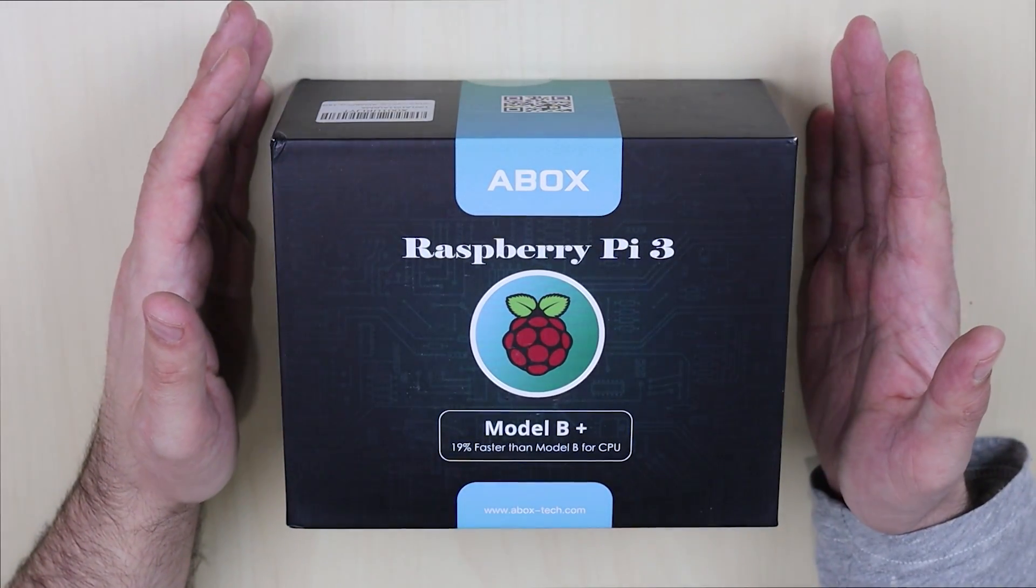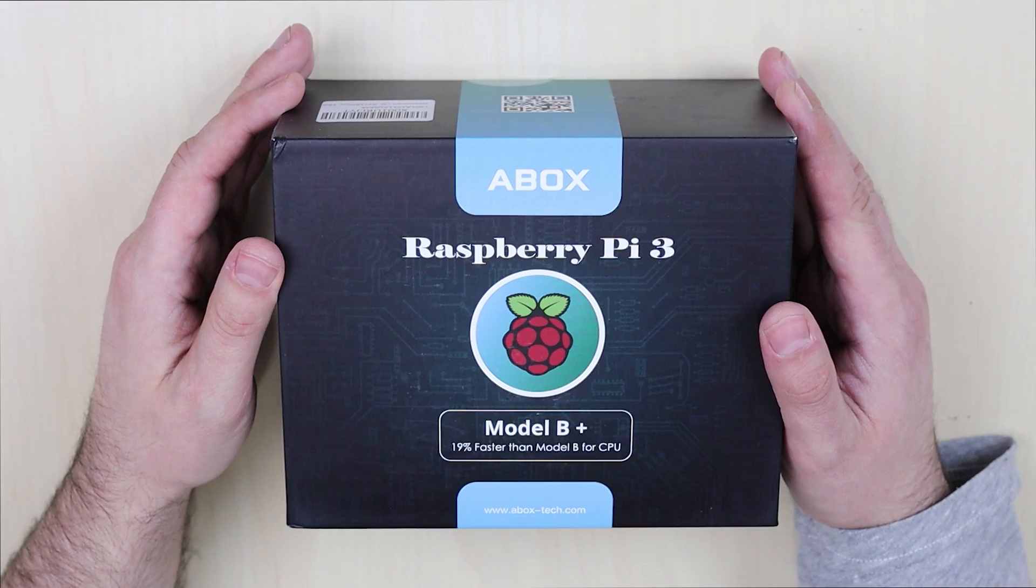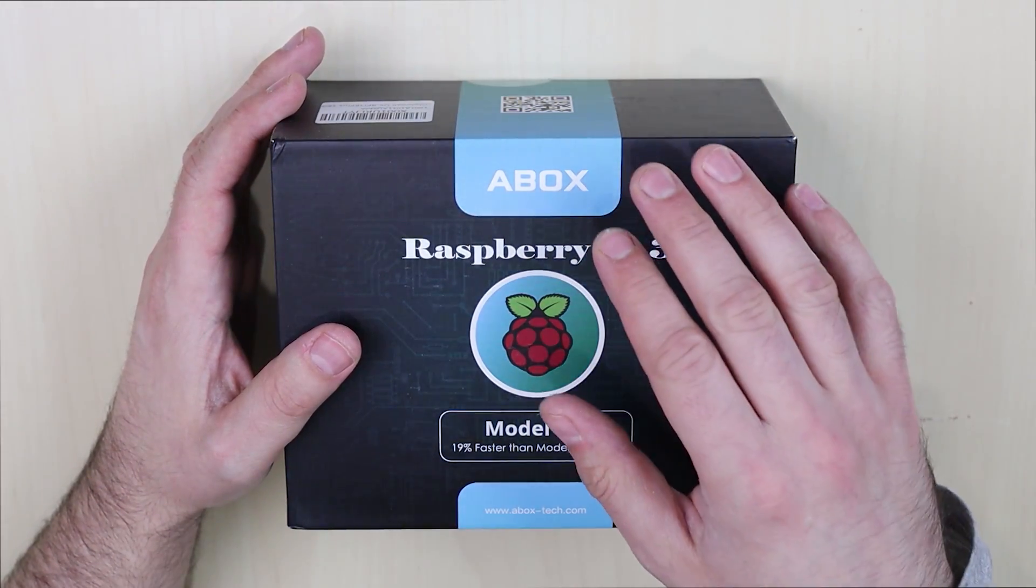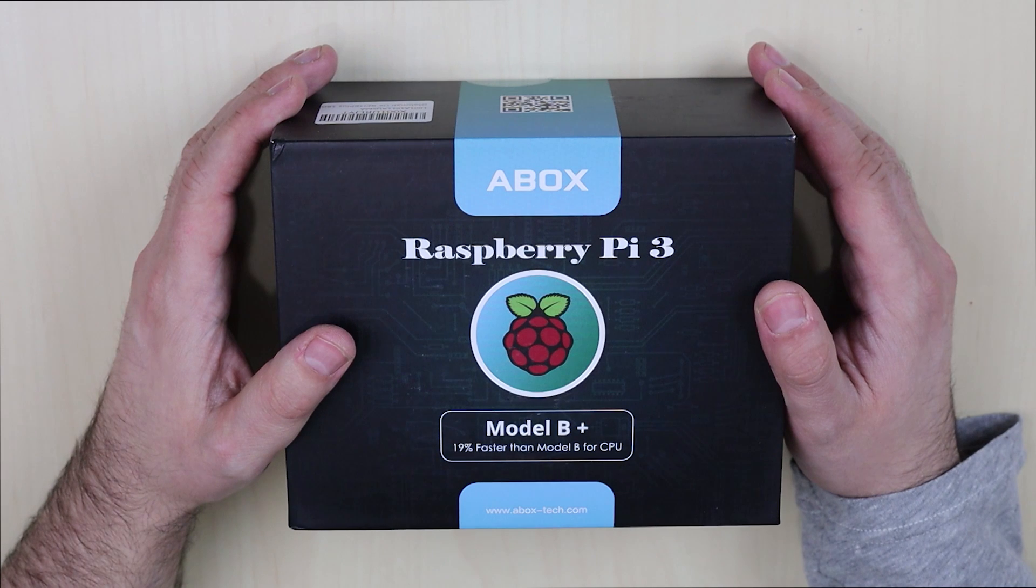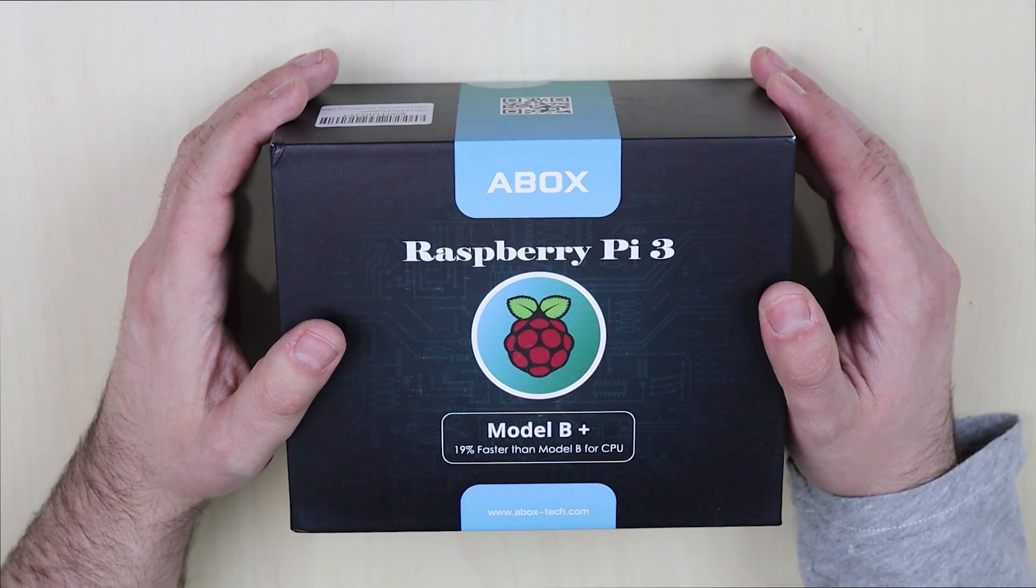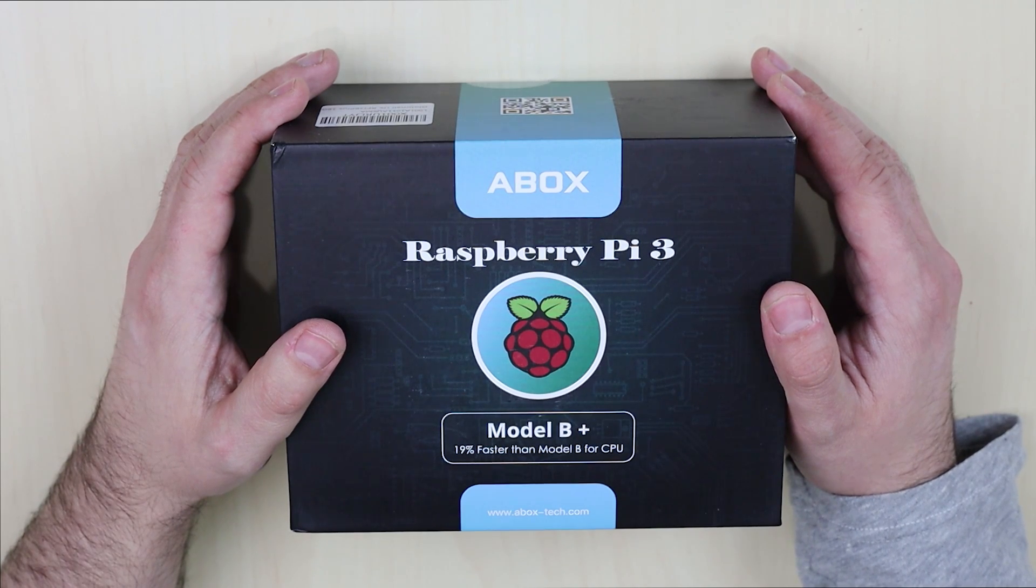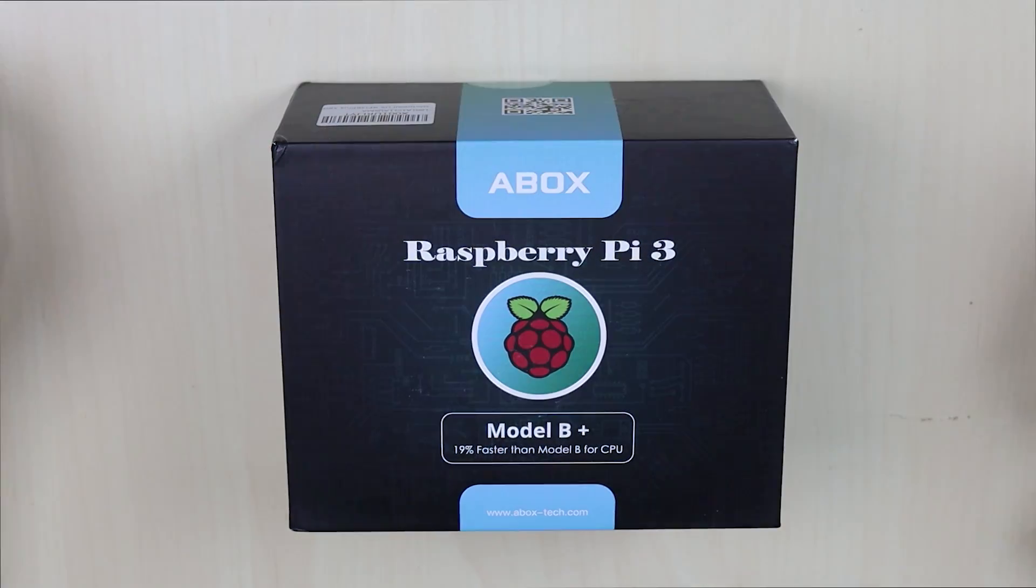I got this right here. This is the EA Box. This is from abox-techs.com. This is the Raspberry Pi 3 Model B Plus kit that they sent me out for review. I'm really grateful for them for sending this out. And we're gonna take a look at what's inside. I can't wait. So let's get started with the video.